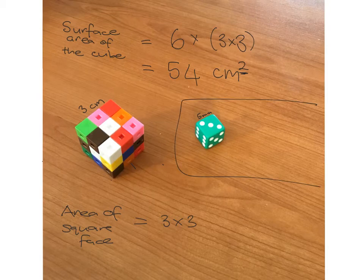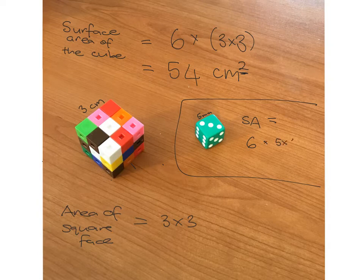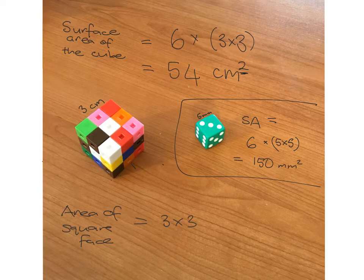If I asked you: what's the surface area of a little dice where each side length is five millimeters, what would it be? Pause the video now and do this for yourself. The surface area has six faces, and each face has an area of five times five. So our answer is six times 25, which is 150 millimeters squared.